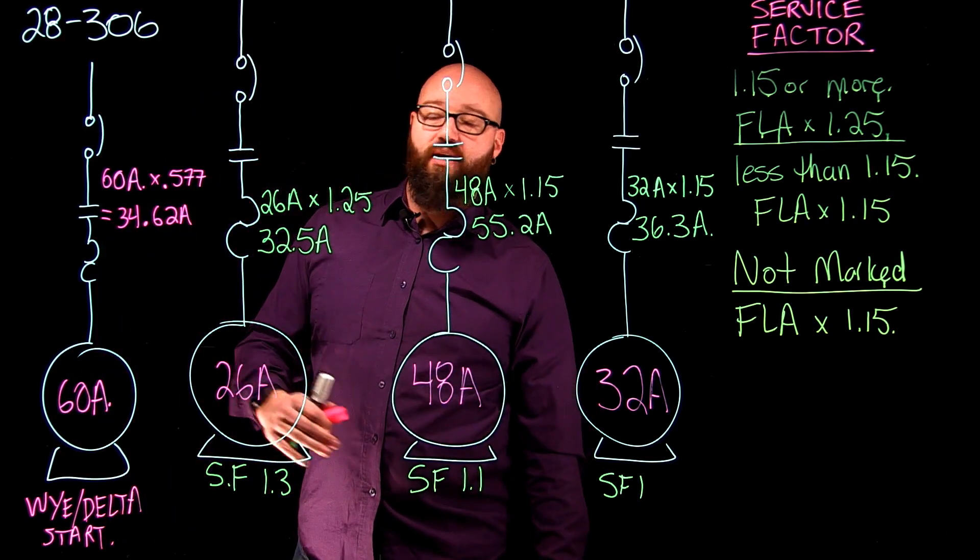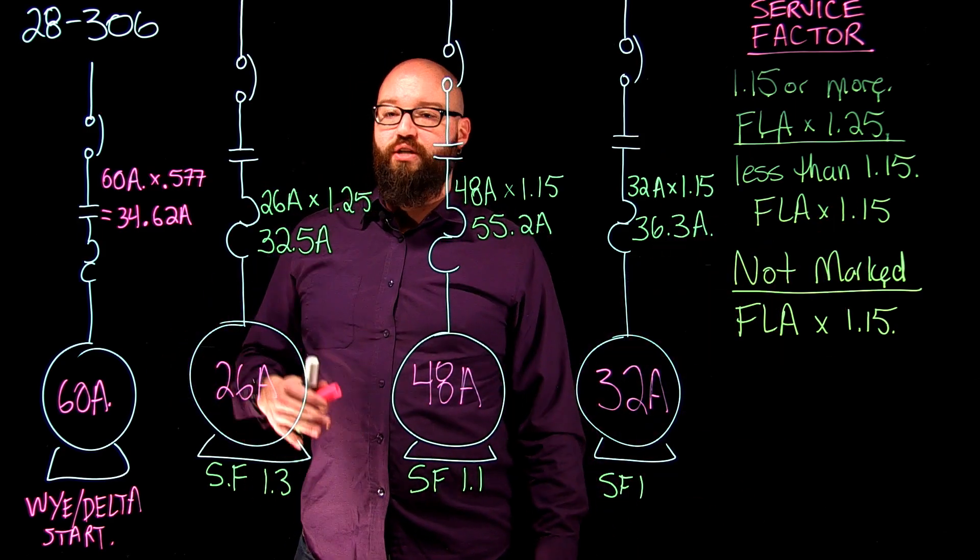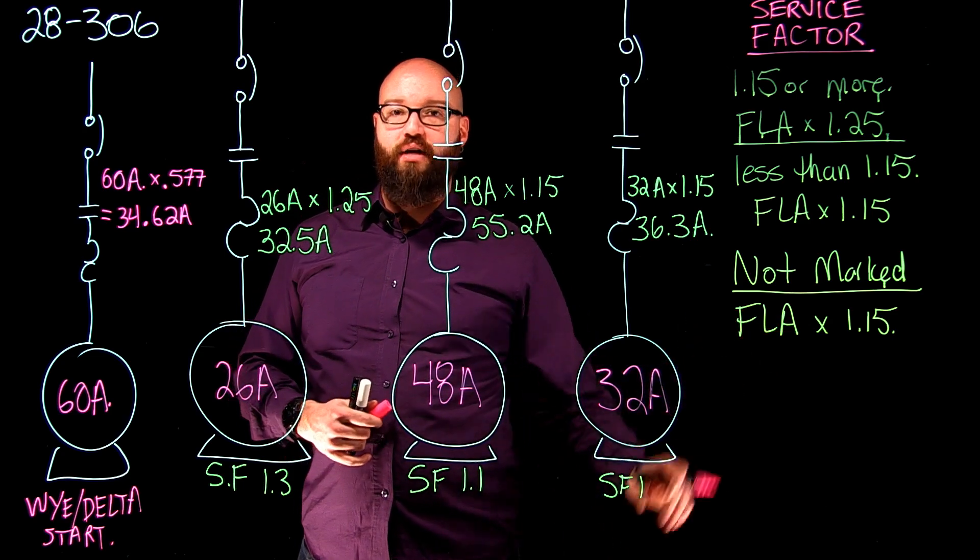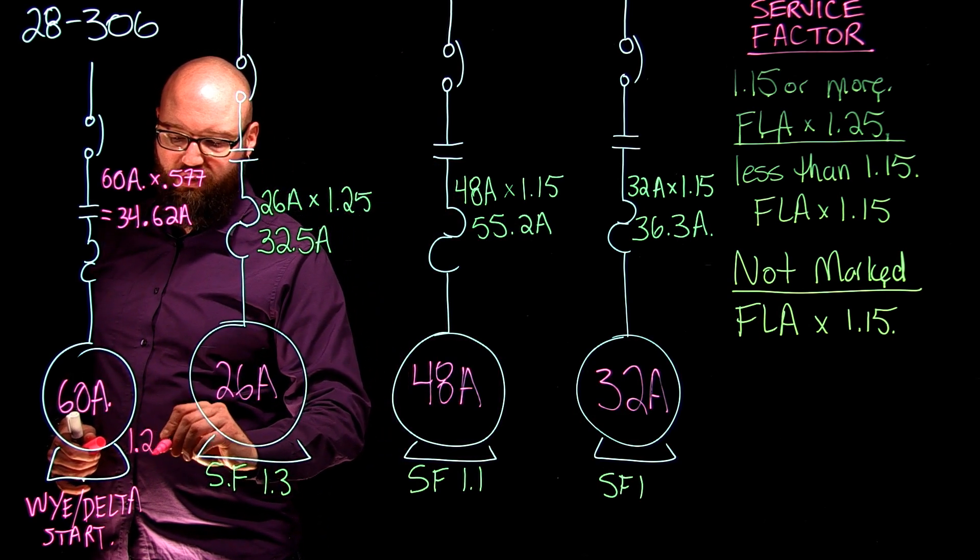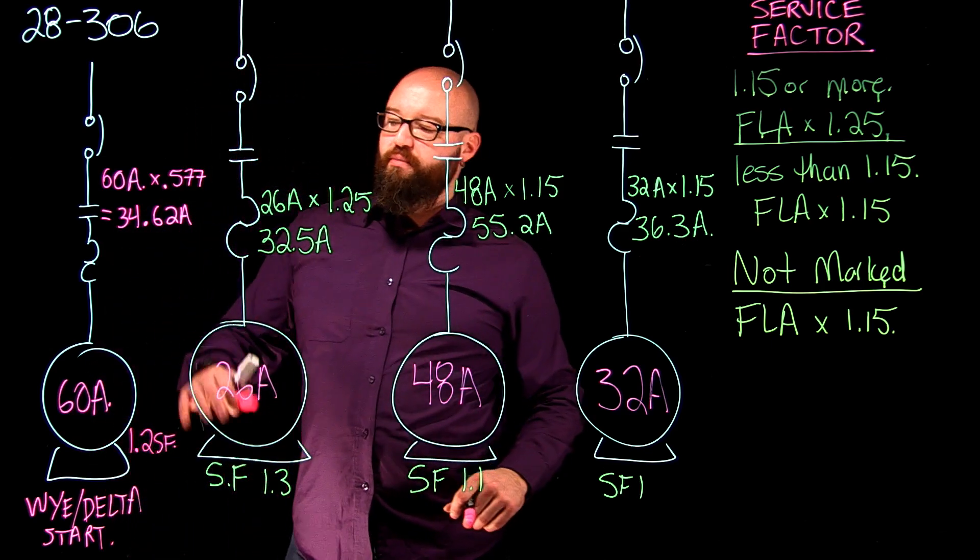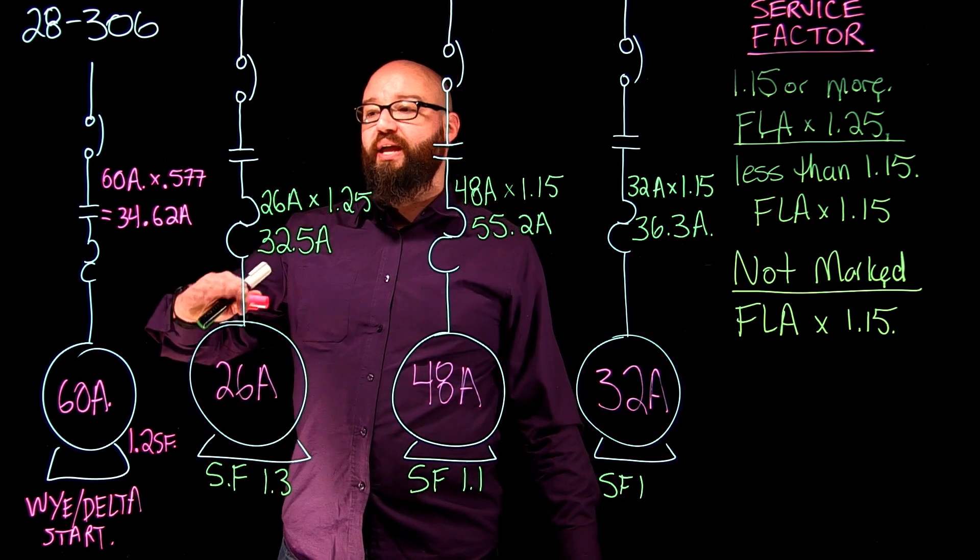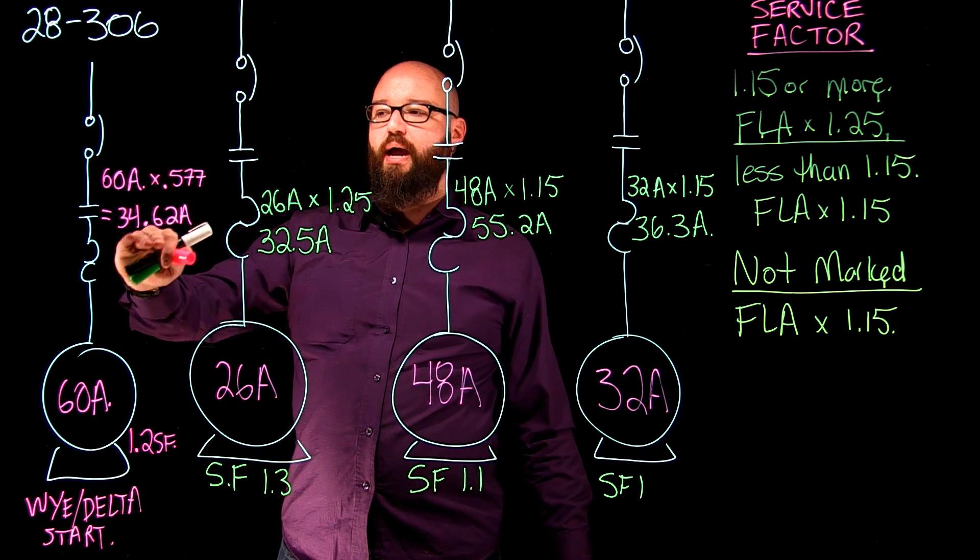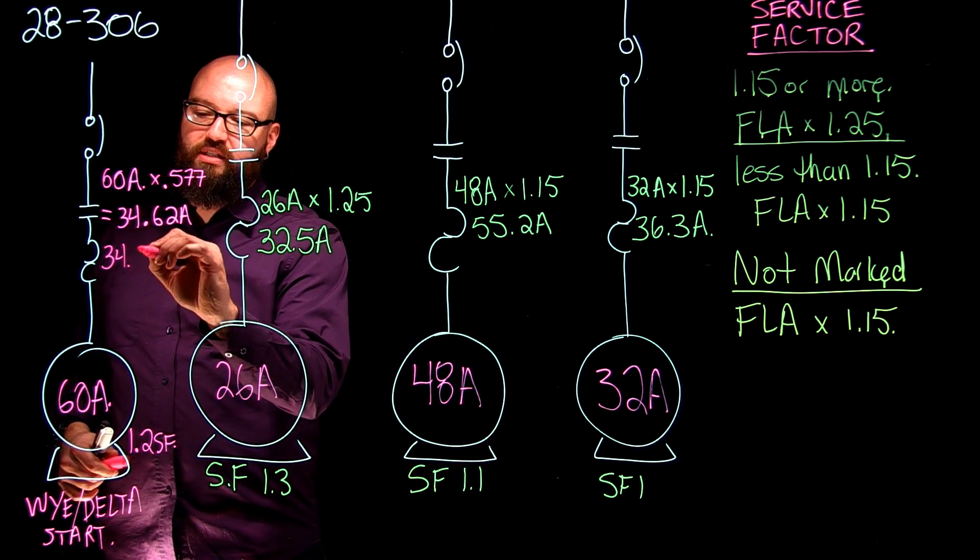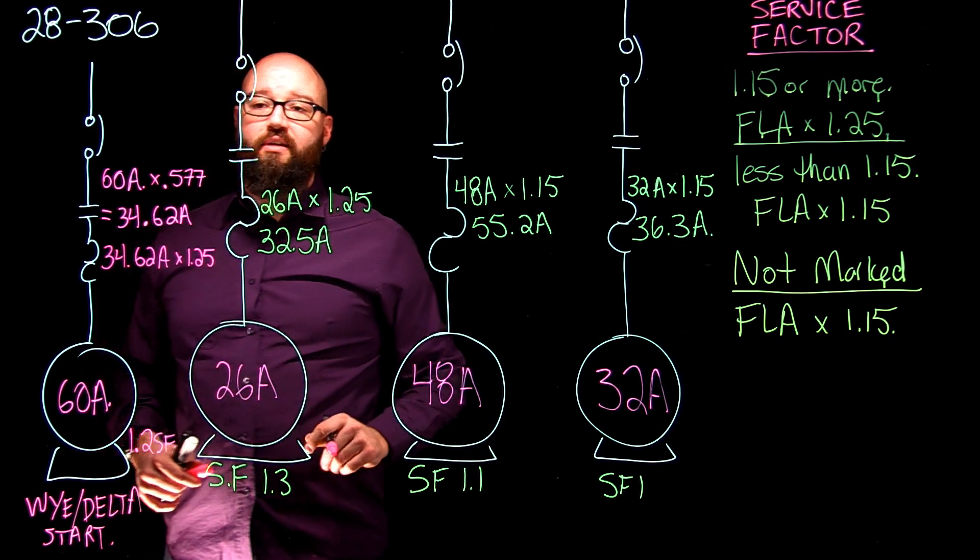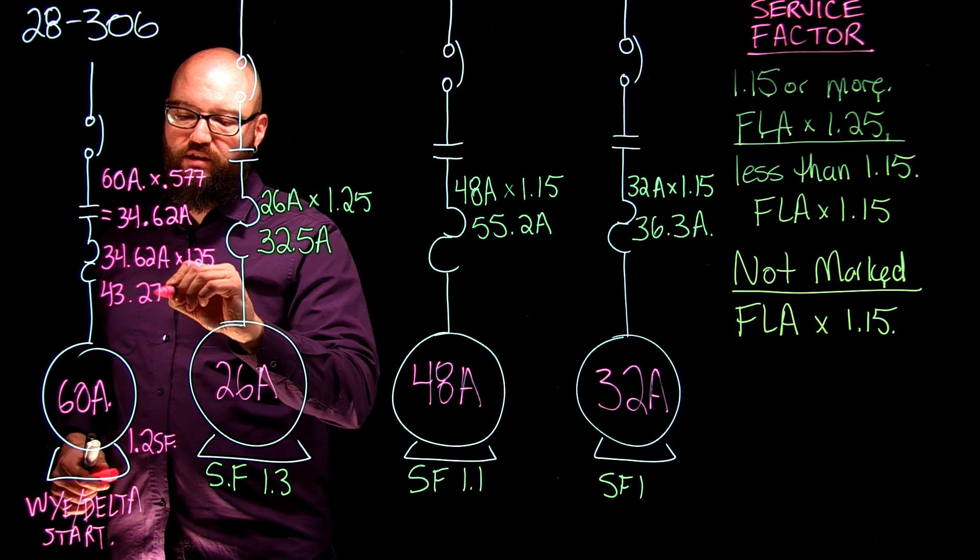Now we're not done yet, because that's just the phase current value. Now I can apply what I know from over here, which is if I have a service factor marked, and we're going to throw a service factor on this one, we're going to say this has a service factor of 1.2. If my motor had a service factor of 1.2, I would apply my 125% because it's over the 1.15. But again, I'm going to use this phase current that I calculated here, not my line current of 60 amps but my 34.62 phase current. So we're going to take our 34.62 amps and multiply it by 1.25, and again that's going to give me my maximum overload setting of 43.275 amps.